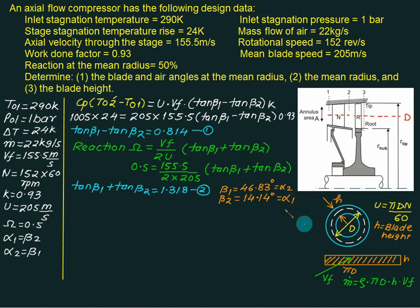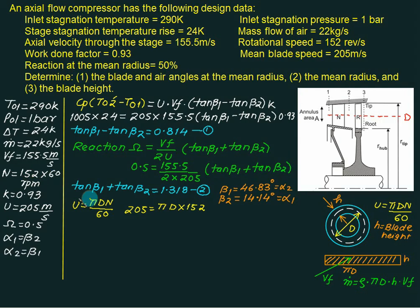Next, we calculate the mean radius from the value of U. U equals pi·D·n, where n = 152 rps (the factor of 60 cancels). With U = 205 m/s and n = 152 rps, we get U = pi·D·152. Solving, diameter D comes out to be 0.43 meters, and mean radius R equals 0.215 meters.